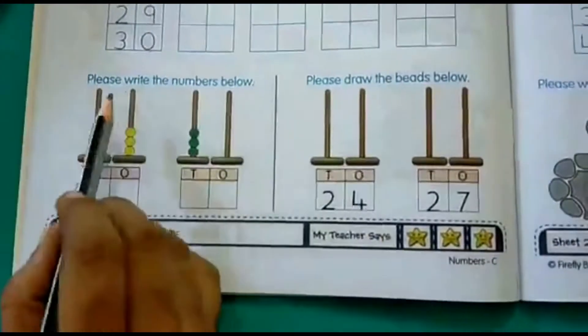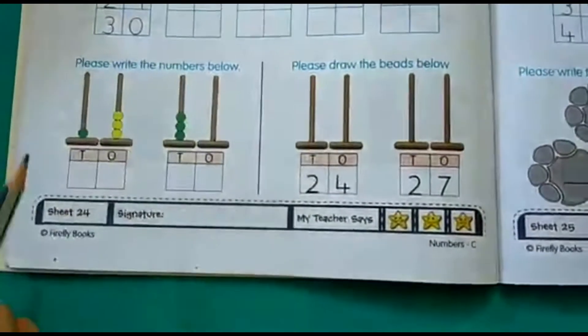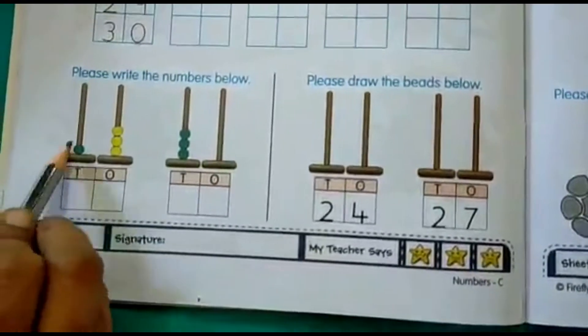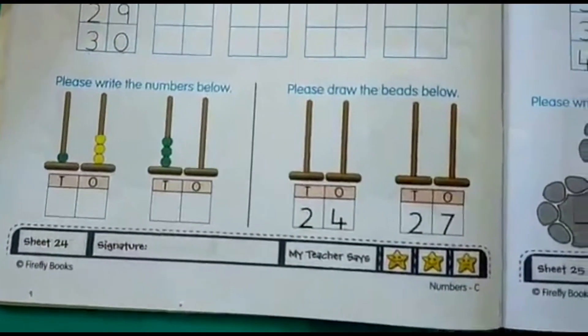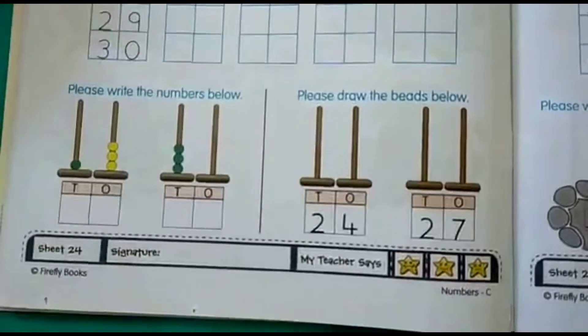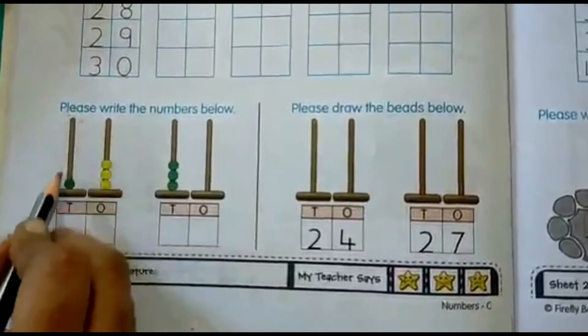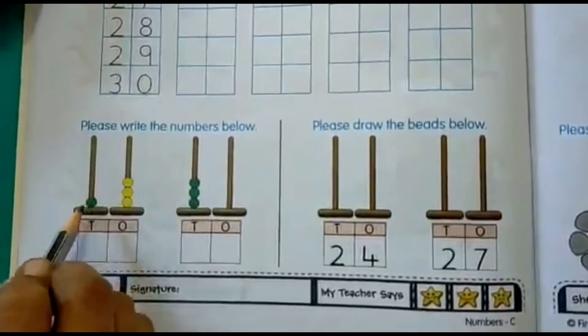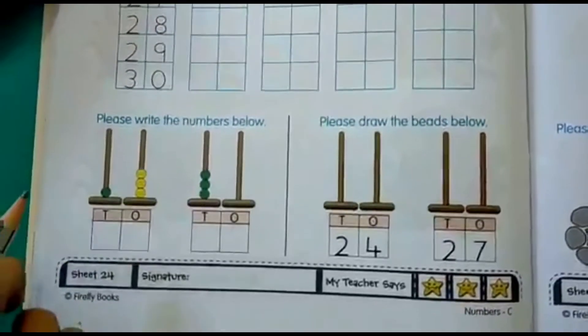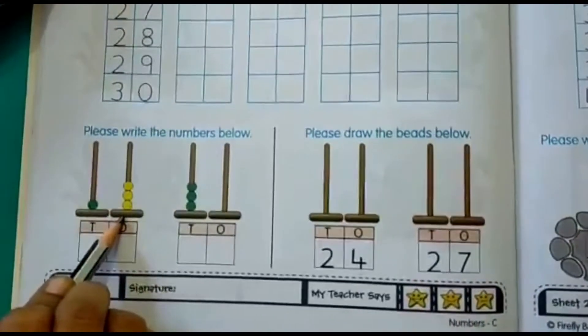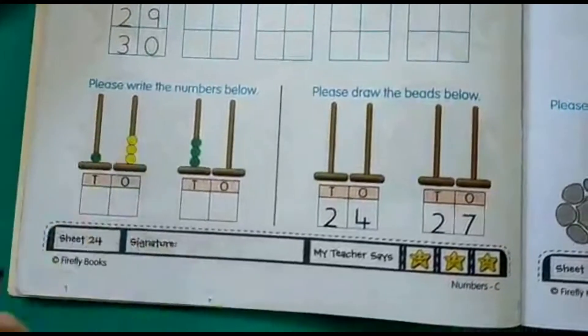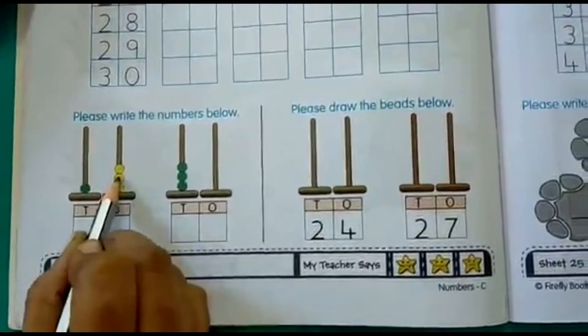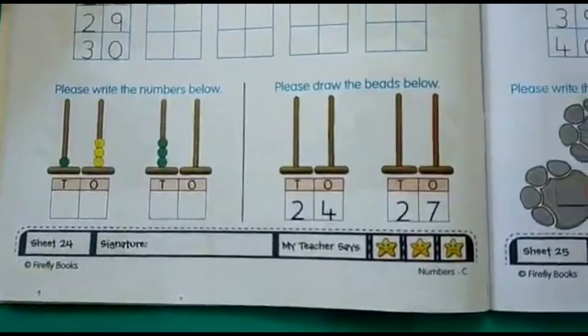Moving to the next activity on this page, please write the numbers below. So here we have two sets of beads. Okay, this is the tens place and this is the ones place. Remember we had done the tens and ones activity earlier, so we have to count. Now anything that is written in the tens place, how will we read it? This is 1 bead, so it is actually 10 beads. This green bead stands for 10 beads. And how many yellow beads are there? 1, 2, 3. So 10 plus 3 is how much? 10 beads and 3 beads. 10, 11, 12, 13. That's how we will count it.